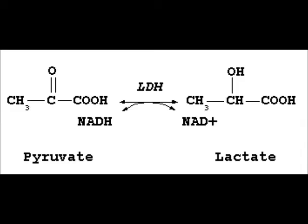During glycolysis, hydrogen is released and picked up by nicotinamide adenine dinucleotide, or NAD, becoming NADH, and goes to the electron transport chain. When insufficient oxygen is available to accept hydrogen at the end of the electron transport chain, NADH backs up, combines with pyruvate, and is converted to lactate. This is a reversible reaction catalyzed by the enzyme lactate dehydrogenase, or LDH.